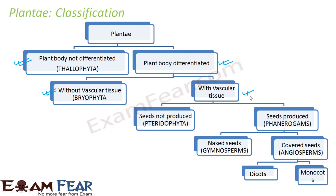Plants with vascular tissue were divided into two types based on whether seeds are produced or not. Those that do not produce seeds were known as pteridophyta — where the 'p' is silent. Those plants where seeds were produced were known as phanerogams. Phanerogams were again divided into two types based on whether seeds were covered or naked: those with naked seeds were known as gymnosperms and those with covered seeds were known as angiosperms.